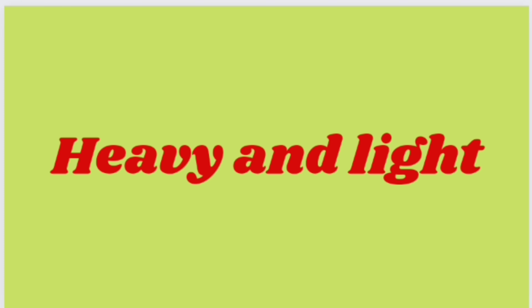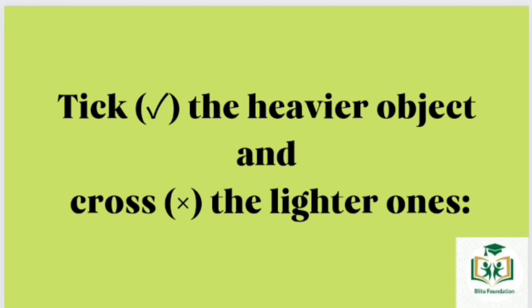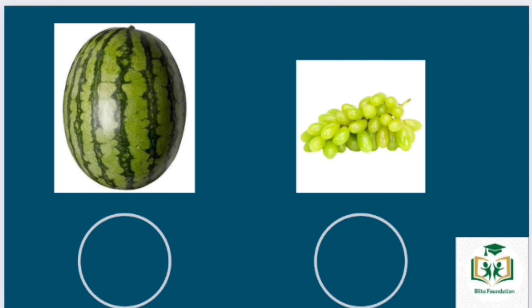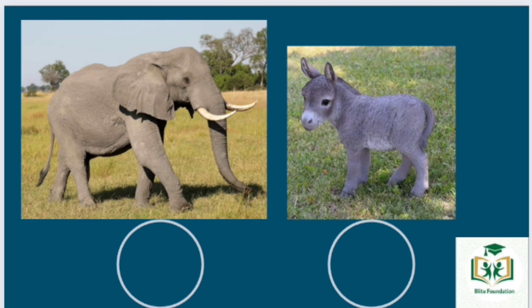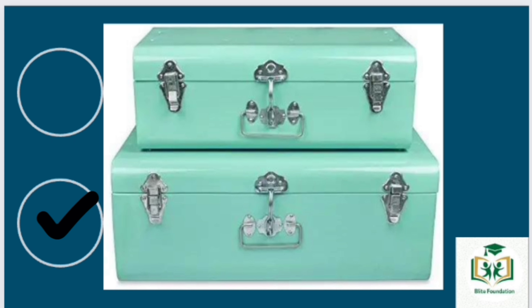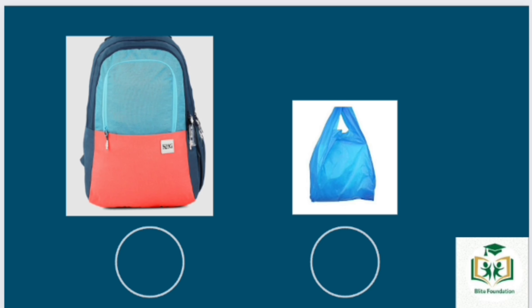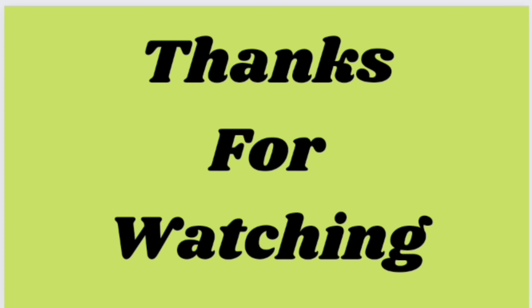Students, now we will do the comparison between heavy and light. Pick the heavier object and cross the lighter ones. Watermelon is the heavier one. Crate is the lighter one. Elephant is the heavier one. Donkey is the lighter one. Lower trunk is the heavier one. Upper trunk is the lighter one. Left bag is the heavier one. Right bag is the lighter one. Thanks for watching.